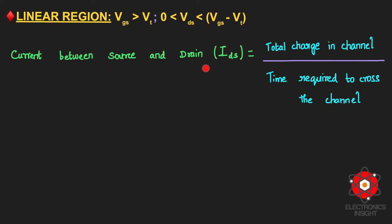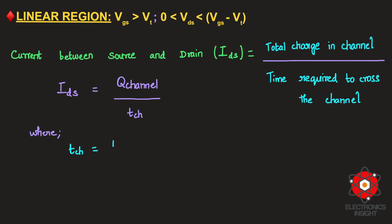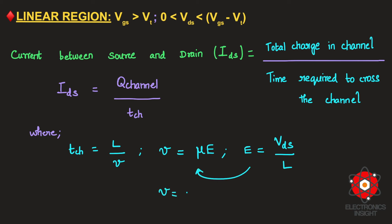The drain-to-source current IDS is the ratio of total charge in the channel to the time required for electrons to cross the channel: IDS = Q_channel / T_CH. Since carrier velocity V = μ × E = μ × VDS / L, substituting gives T_CH = L / V = L² / (μ × VDS).